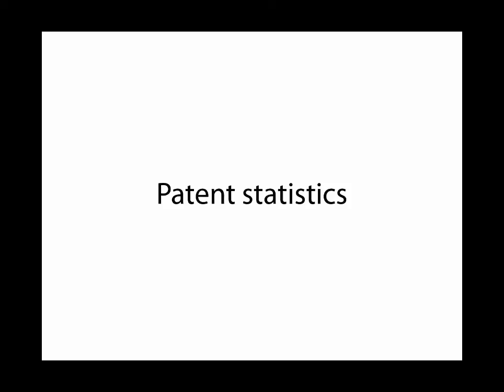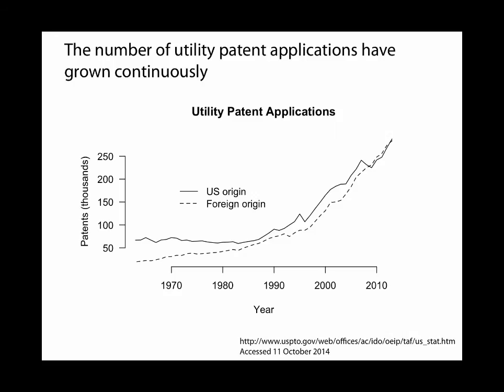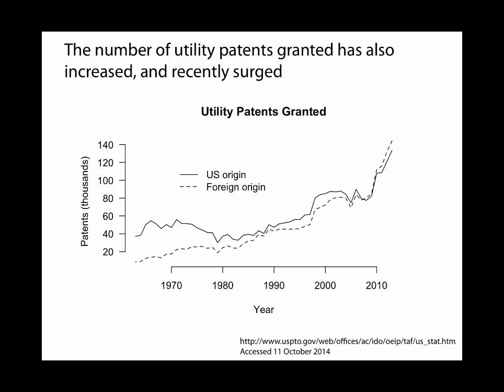Here is a plot of the history of utility patent applications. Notice the scale is in hundreds of thousands — 200,000 to 300,000. These are from both U.S.-origin and foreign-origin companies or institutions, and the plot shows they're roughly equal and growing. Utility patents granted show a similar pattern of roughly equal U.S. and foreign origin. These are United States patents — individual countries grant their own patents, so this doesn't represent all patents in the world.